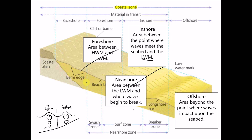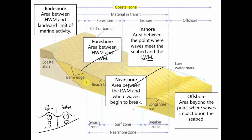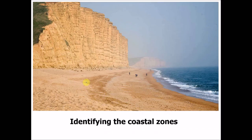The back shore is the area above the high water mark, extending as far inland as any marine activity occurs. Changes in this zone normally only occur during storm conditions, since waves don't usually reach here. Wind-driven activity also operates in this zone — for example, the formation of sand dunes occurs in the back shore zone.